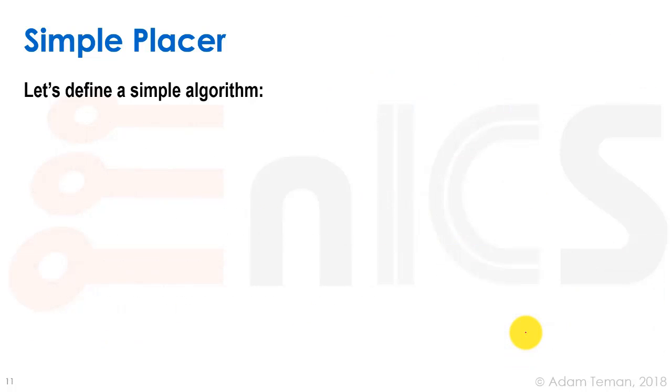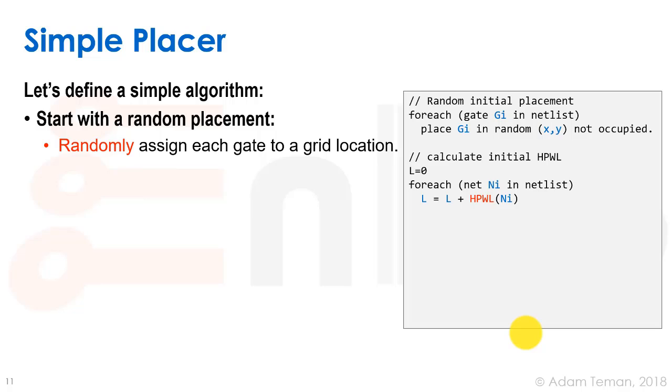Now that we have our cost metric and our definition of our model, we can define a simple algorithm. What we're going to do is start with something really naive - we're just going to randomly place each gate.